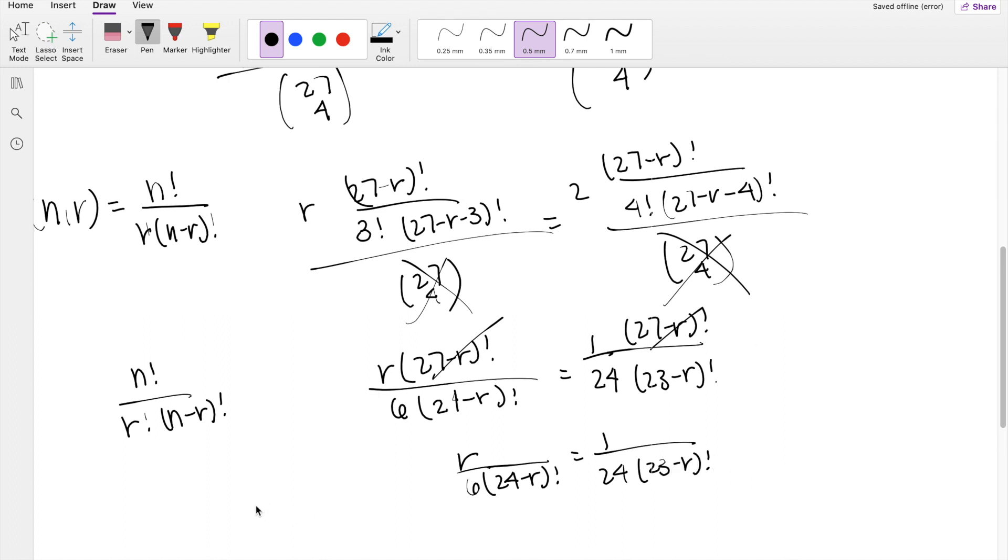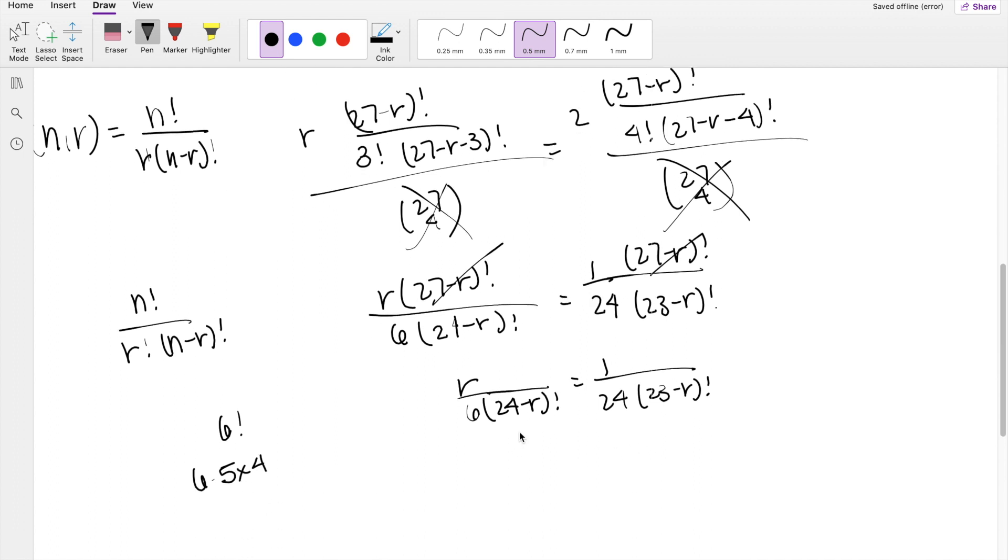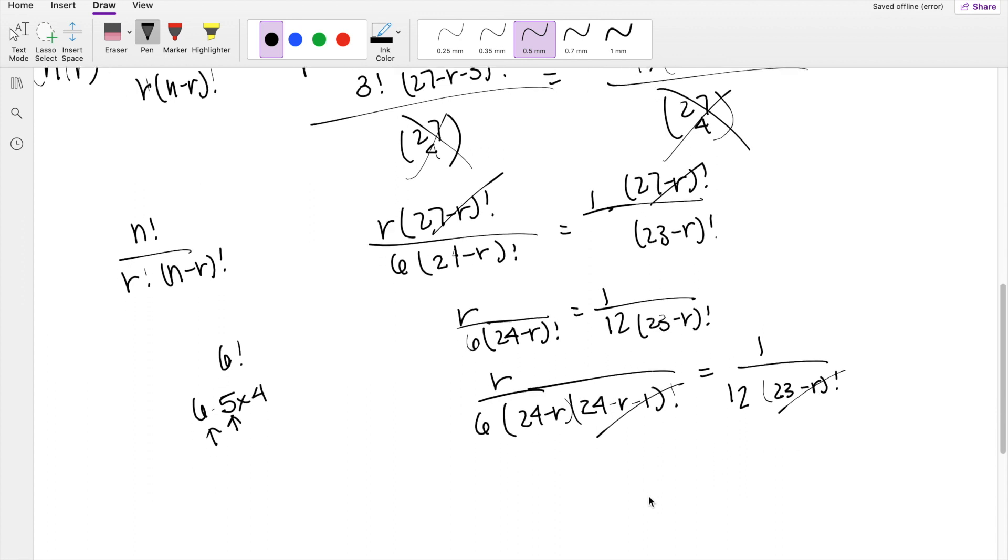And we know factorials are 1 less, right? So let's say if it's like 6 factorial, it's going to be like 6 times 5 times 4 and so on. So it's the same idea. We know that 24 factorial is equal to 24 minus R times 24 minus R minus 1, right? Because this is 1 less than this number right here. Factorial is equal to 1 over 24, 23 minus R factorial. Wait, this should be 12. So then these actually now cancel out.